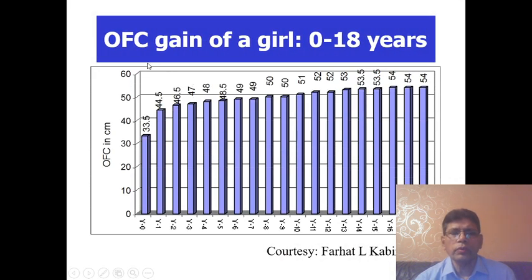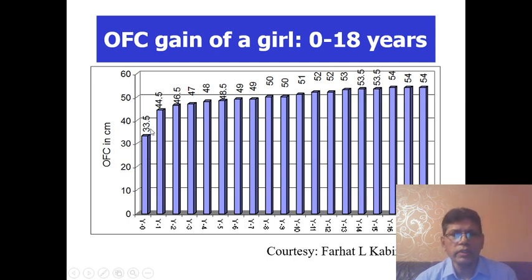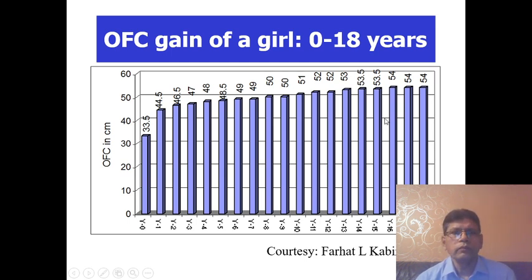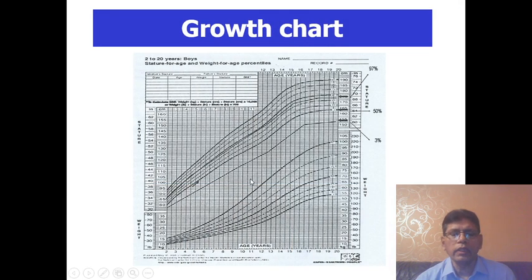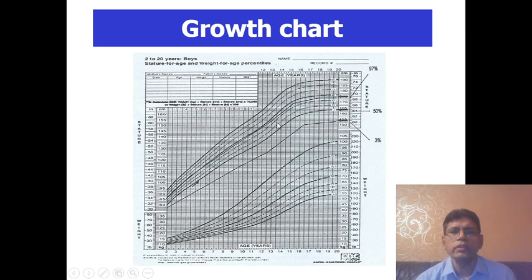And at the age of 18 years, 163.5 centimeters. This is the occipital frontal circumference of a girl from birth to 18 years. At birth the OFC was 33.5 centimeters, and at the age of 18 years it was 54 centimeters. After measuring weight, height, and OFC, we plot on the chart — weight chart and height chart — and compare whether this is normal or abnormal.